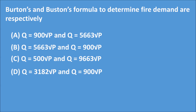Q7: Burton's and Buston's formulas to determine fire demand are respectively — Option A: Q = 900√P and Q = 5663√P; Option B: Q = 5663√P and Q = 900√P; Option C: Q = 500√P and Q = 9663√P; Option D: Q = 3182√P and Q = 900√P. The correct answer is Option A. Buston's formula for determination of fire demand is Q = 5663√P.